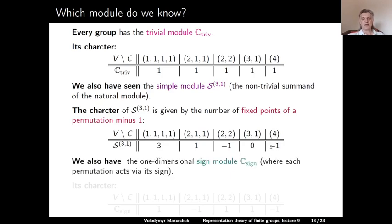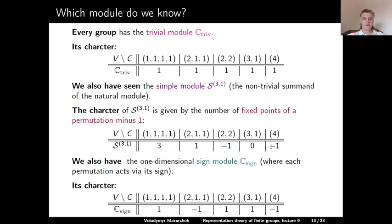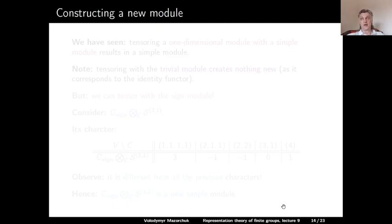We also have the one-dimensional sign module C_sign, where each permutation acts via its sign. The character values at each conjugacy class are given by the sign of any element in that class: the identity has sign 1, a transposition has sign -1, a product of two transpositions has sign 1, a 3-cycle has sign 1, and a 4-cycle has sign -1. So these are three simple modules we know, but we need five, so there are two modules yet to determine.